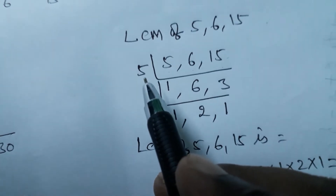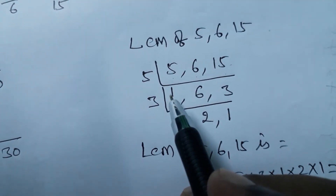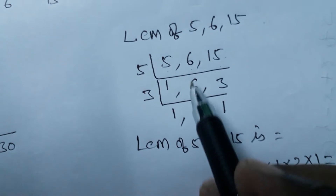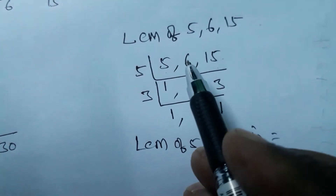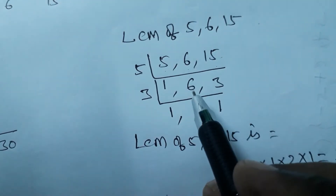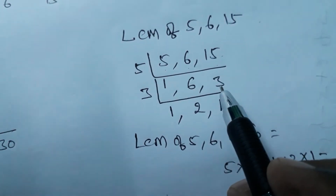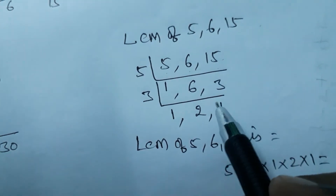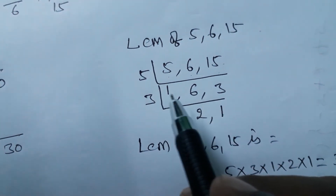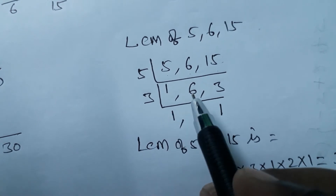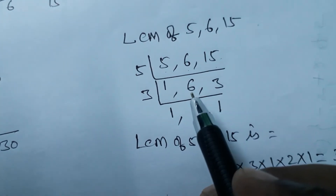So take 5 as the divisor. 5 divided by 5 is 1. 6 is not divisible by 5, so write 6 as it is. 15 divided by 5 is 3. Now you have new numbers: 1, 6, 3.